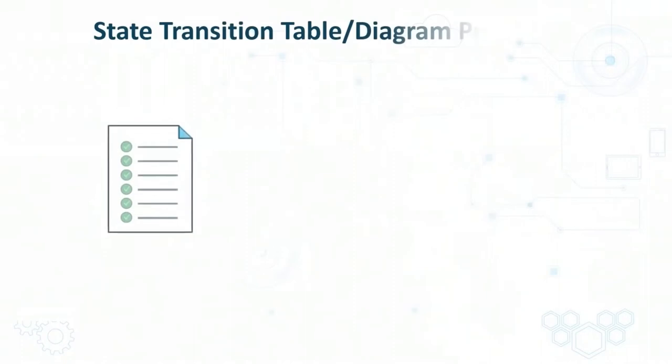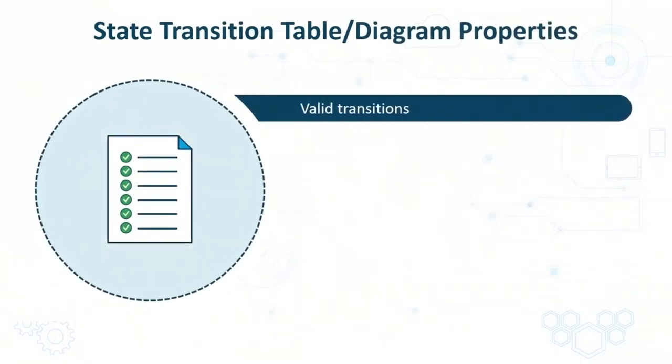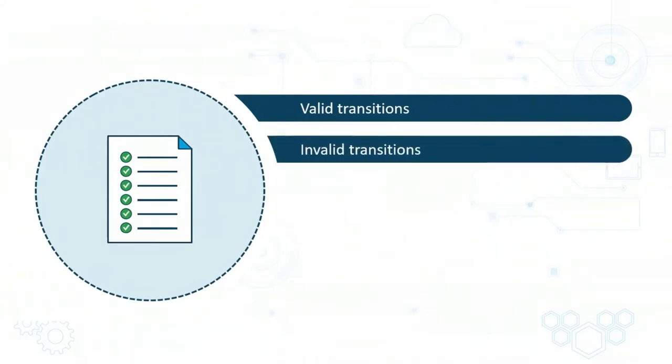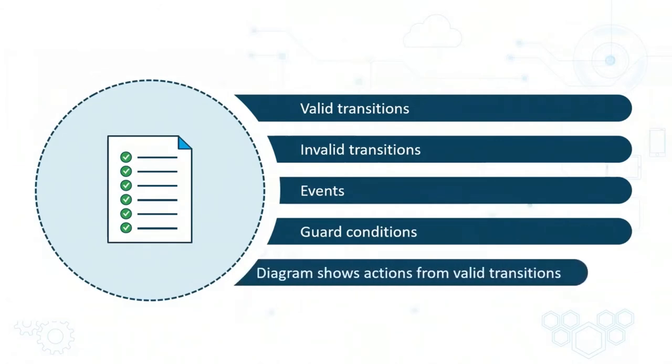A state transition table shows all the valid transitions and potentially invalid transitions between states, as well as the events, any guard conditions, and the resulting actions for valid transitions.